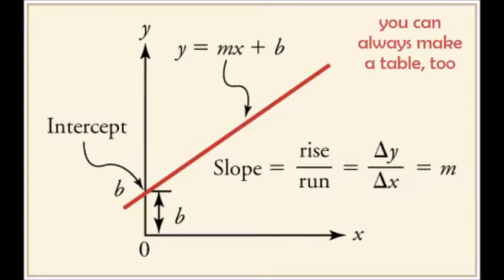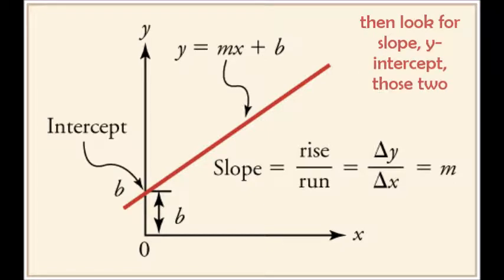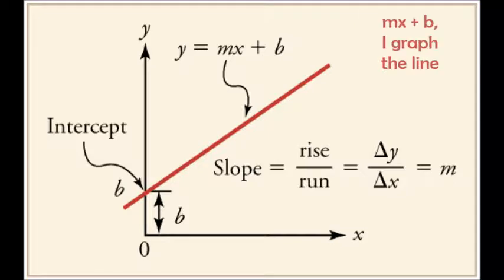You can always make a table too, plot the points and see where it goes through, then look for slope y-intercept those two, mx plus b, I graph the line.